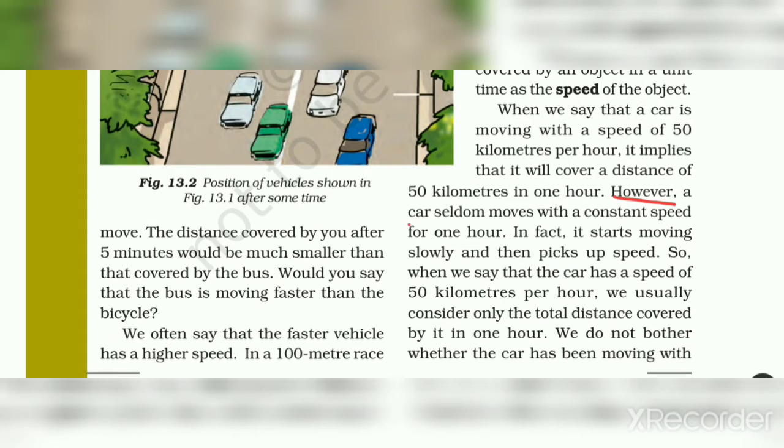However, a car seldom moves with a constant speed for one hour. In fact, it starts moving slowly and then picks up speed. Car jo hai wo ek hour mein seldom constant speed se move hoti hai. Pehle wo start hoti hai, toh slowly move hoti hai, uske baad uski speed pick up ho jati hai.